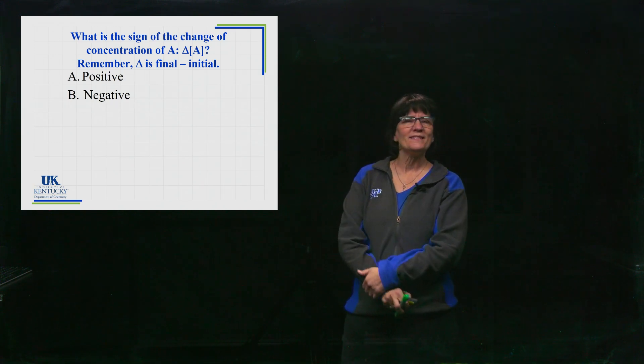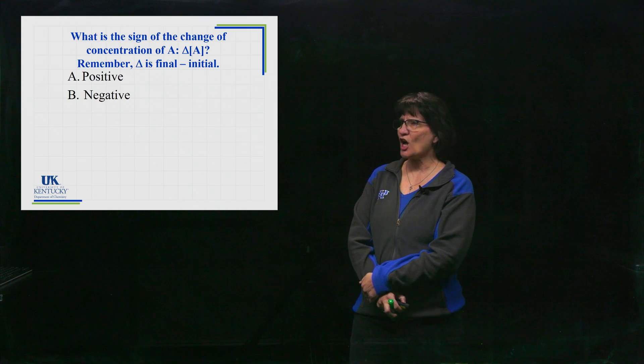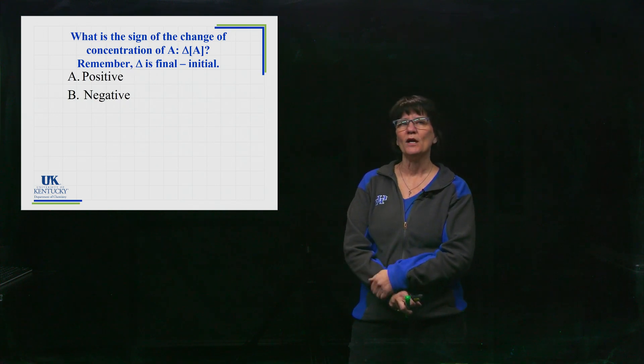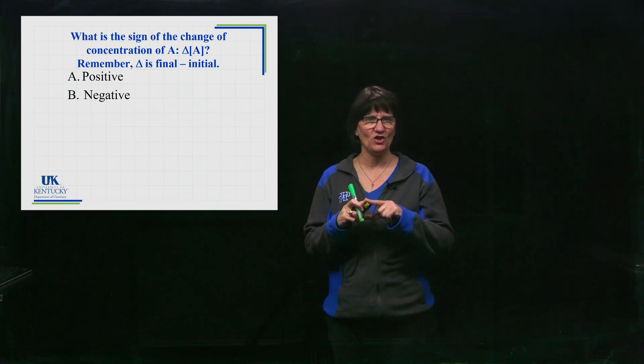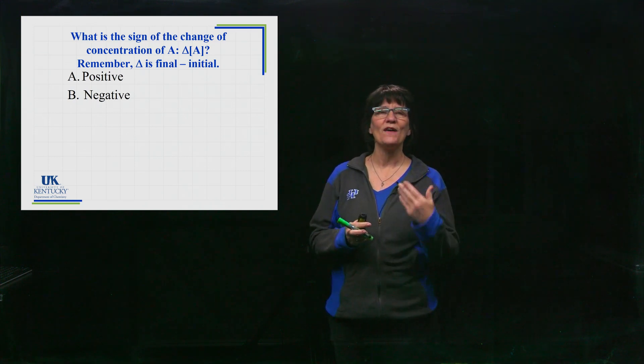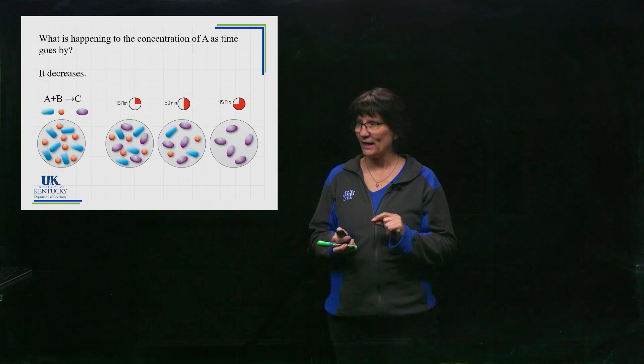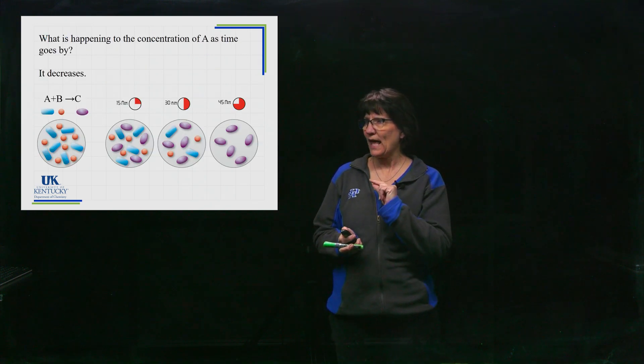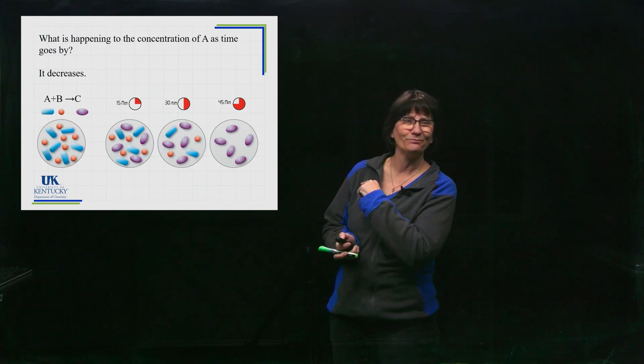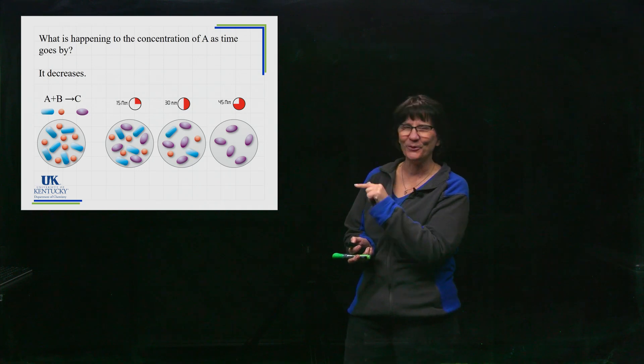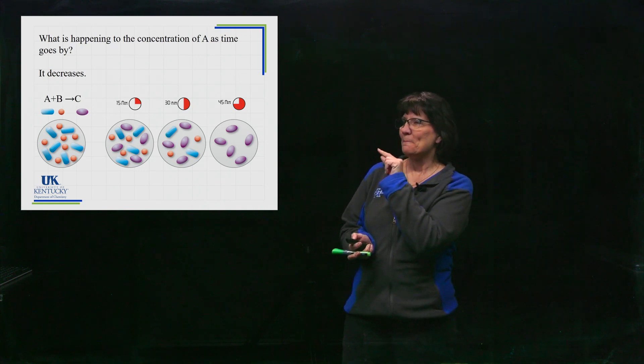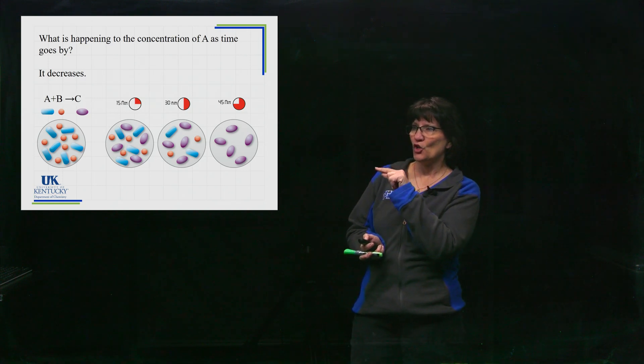Now here is starting to put some numbers with it. What's going to be the sign of the change in its concentration? Now remember, Delta is the symbol we use for the change in, and it is always final minus initial. Now if we're looking at A, and we'll go back to the picture there for looking at A, I'm sorry I said it was a red circle, correct that. It is the blue oval there, looks kind of like a capsule, doesn't it?